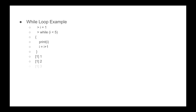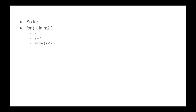Now we've got our outer loop and our inner loop, and we can combine the two together. We say for k in n to 2, open our curly brackets, i equals 1, while i is less than k, then we put in our code. Remember to say i equals i plus 1, and make sure that you close the brackets. This is a little bit confusing having a loop within a loop, so it's good to play around with this in R using the print function so you can see how the loops are changing.